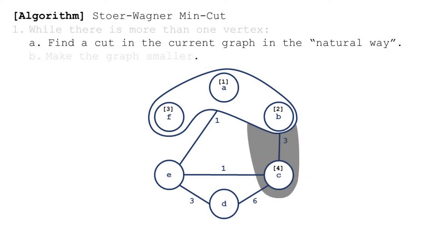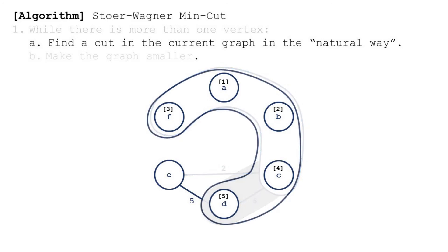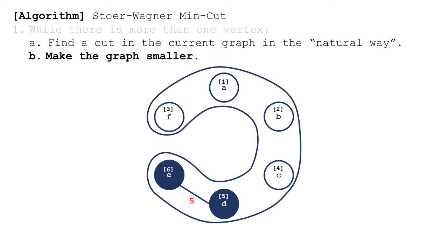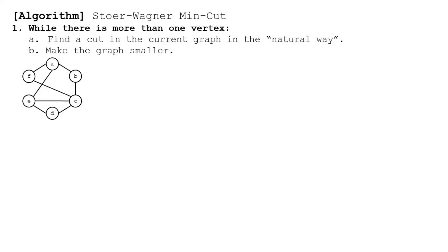We continue until every vertex is in the set. The cut will put the last vertex on one side and all other vertices on the other. To make the graph smaller, we'll merge the last two vertices added — here E and D. When merging two vertices, we delete the edges going between them. Any edge going to either E or D will now go to DE, the new merged vertex.